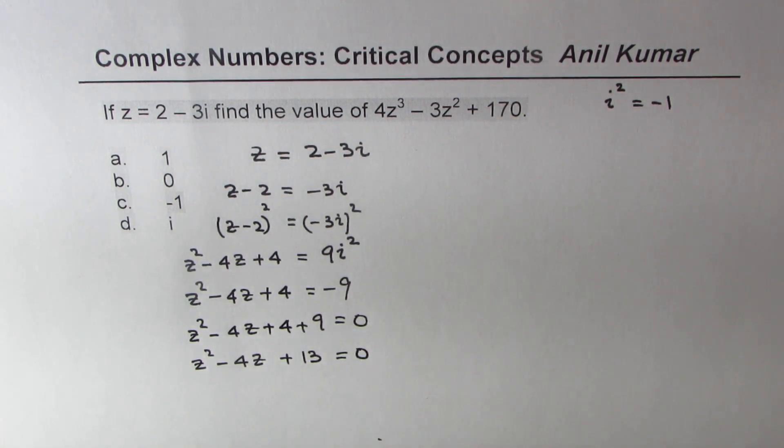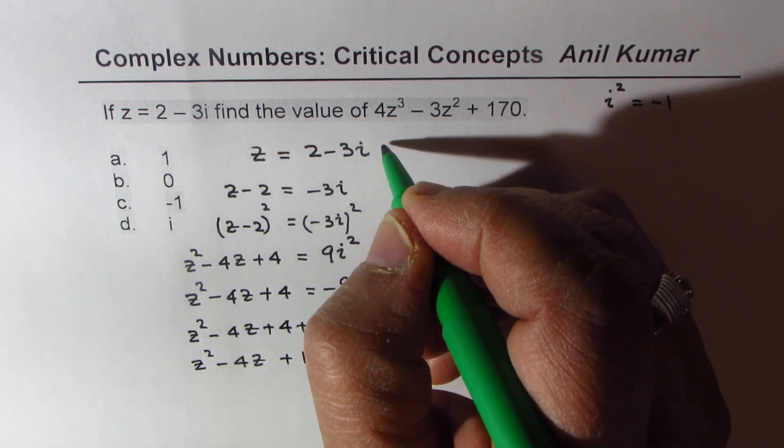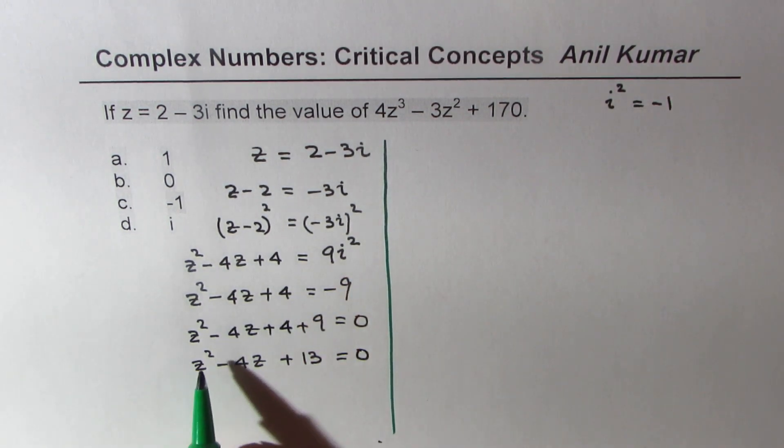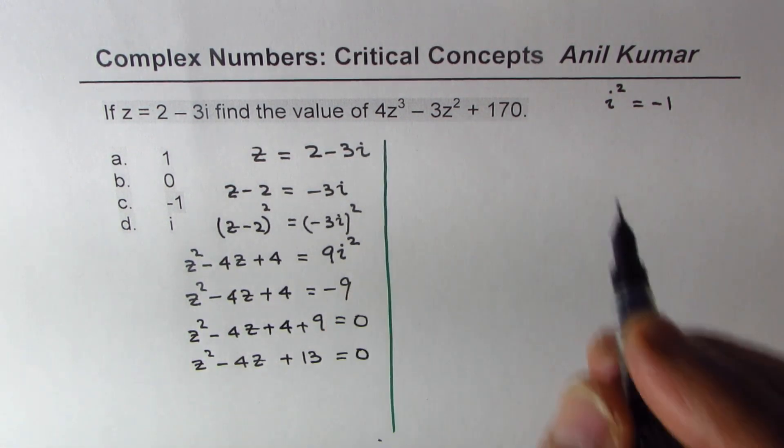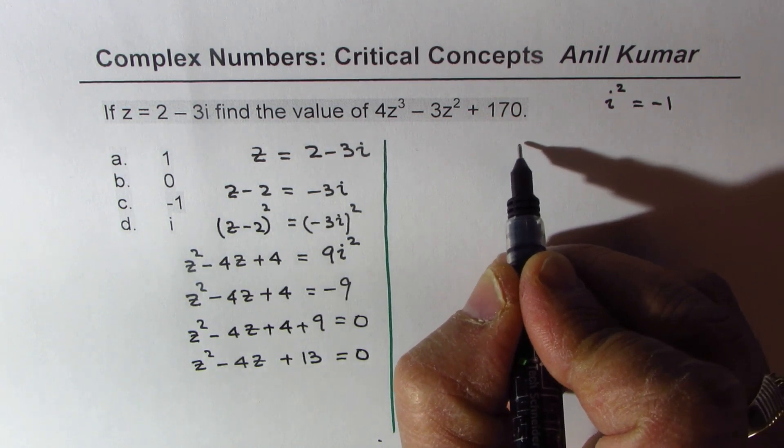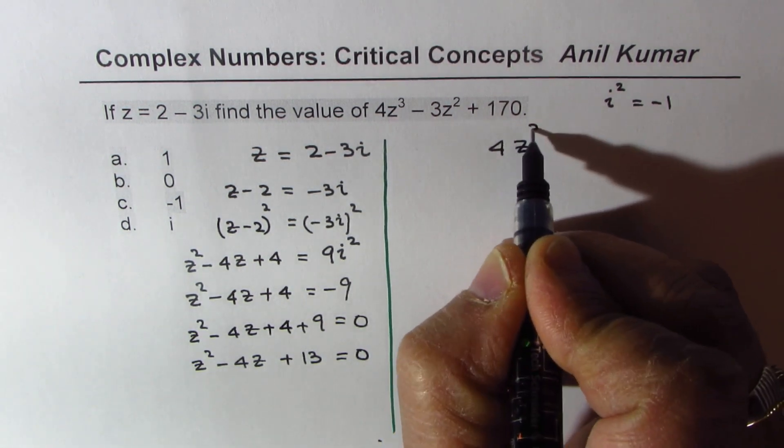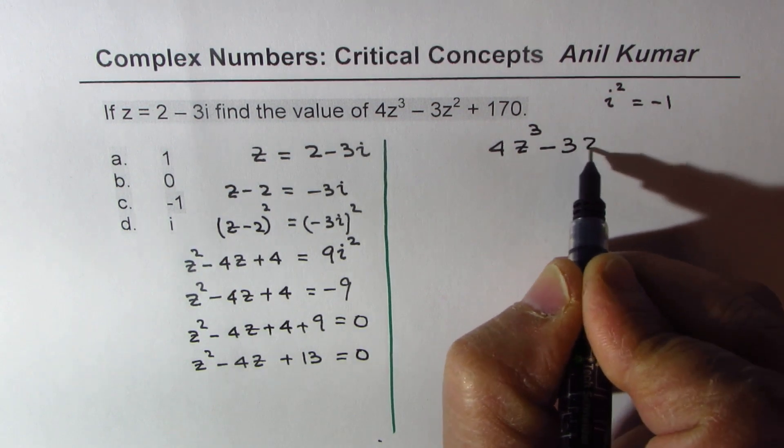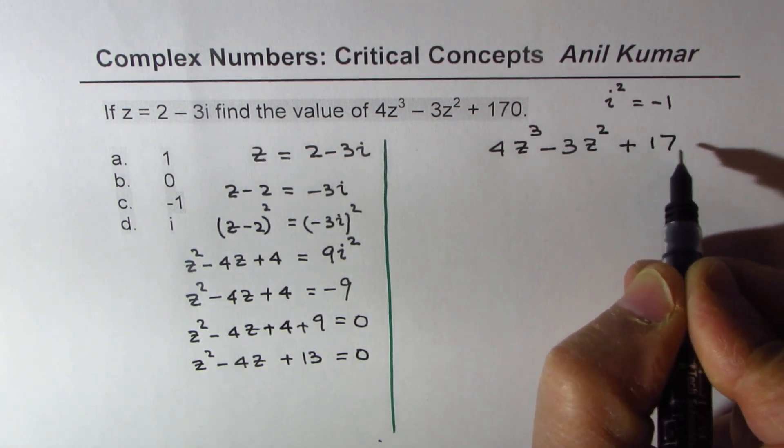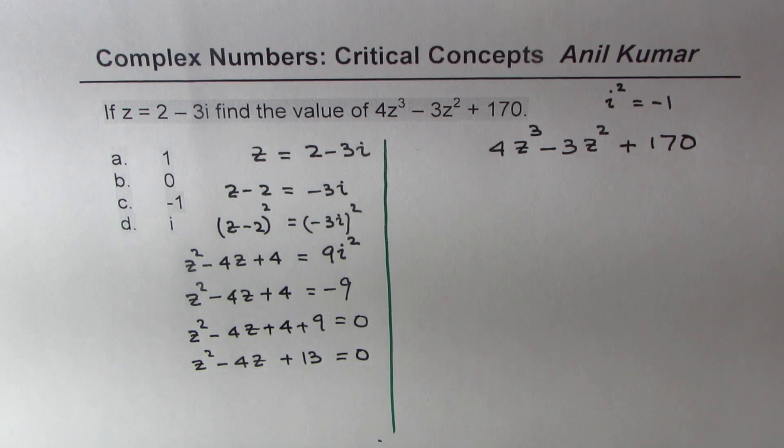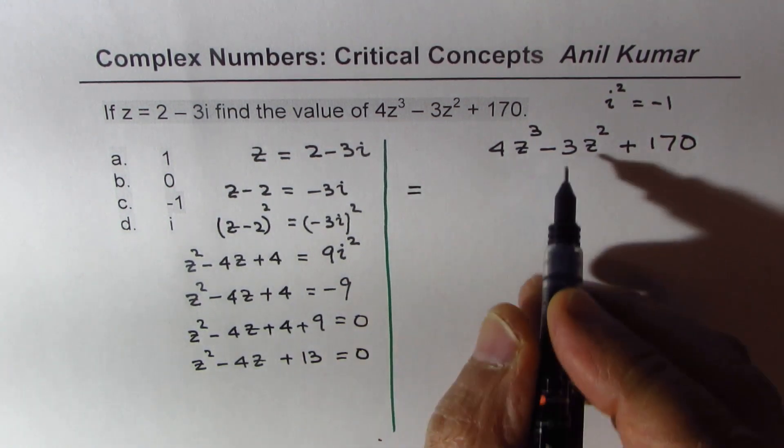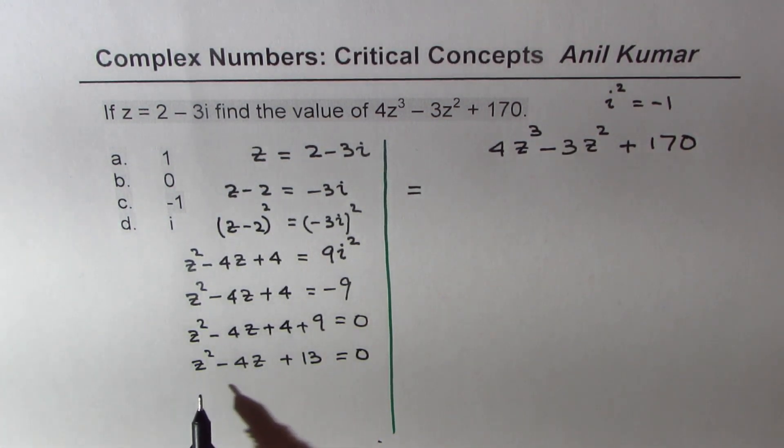So we get one equation which says: complex number squared minus 4 times that complex number plus 13 is equal to 0. Now the idea here is that we need to actually evaluate what is 4z³ - 3z² + 170. So what we are trying to do here is write this polynomial in terms of product and sum.